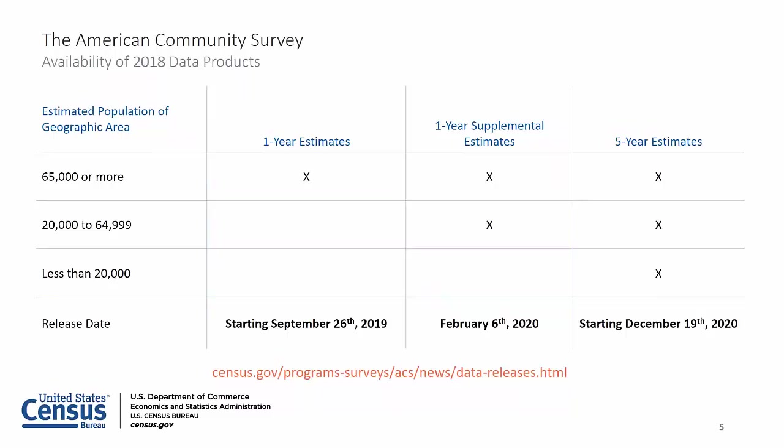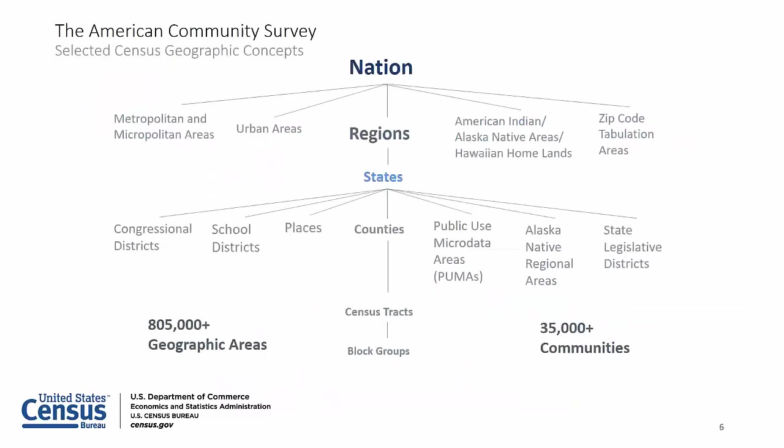I want to go over the release dates for these data sets because they will be a little different this year. Releases will be on a modified staggered schedule due to delays in processing resulting from the lapse in federal funding in January. ACS data collected in 2018 is planned for release on September 26 as one-year estimates, with remaining tables on October 17, 2019. The one-year supplemental estimates are planned for February 6 of next year. The 2014 to 2018 five-year estimates are planned for December 19, 2019, with remaining tables on January 16, 2020.